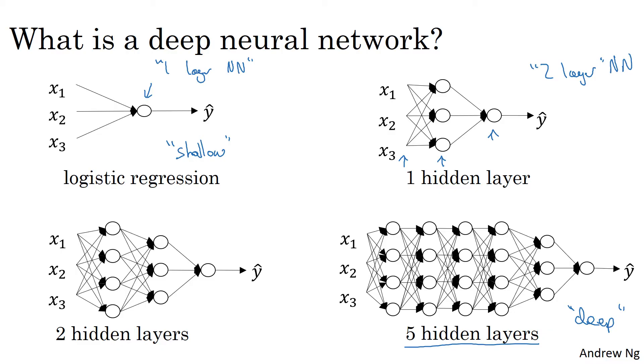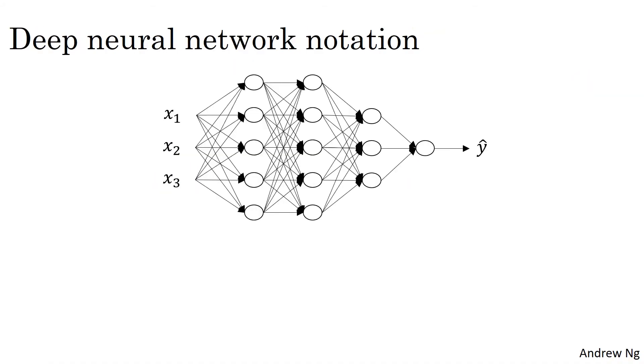Let's now go through the notation we'll use to describe deep neural networks. Here is a one, two, three, four-layer neural network with three hidden layers. And the number of units in these hidden layers are five, five, three, and then there's one output unit.